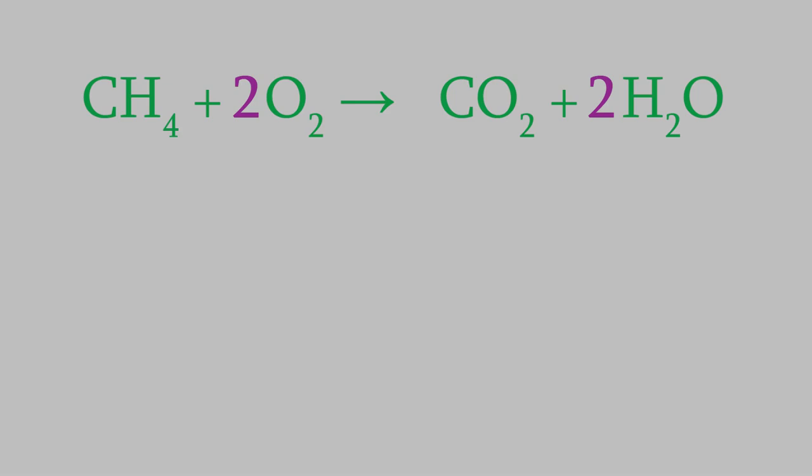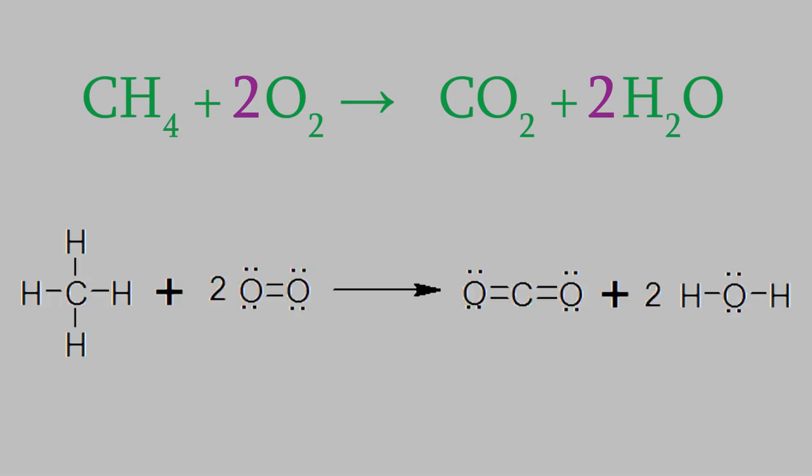Now is where Lewis dot structures come in handy. In order to predict the enthalpy, we want to know what bonds these molecules have, so we'll need to draw the Lewis structures. By now you know how to draw these. Here's a picture of the Lewis structures in this reaction.